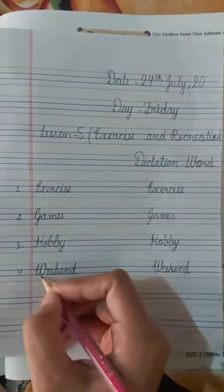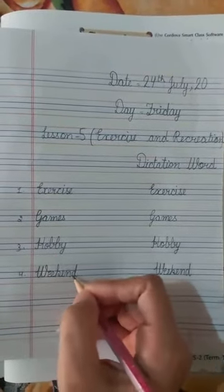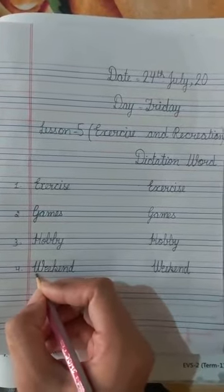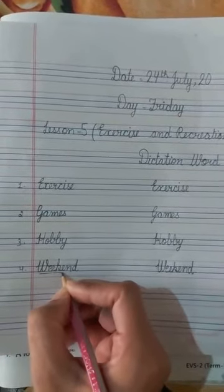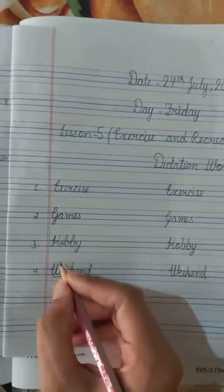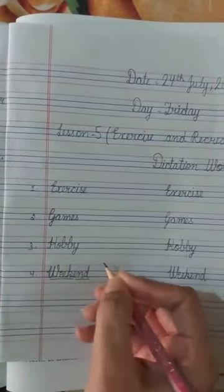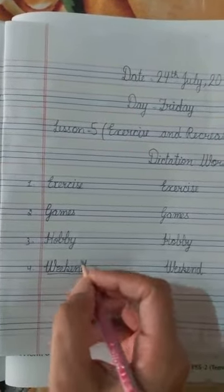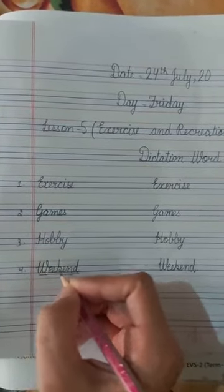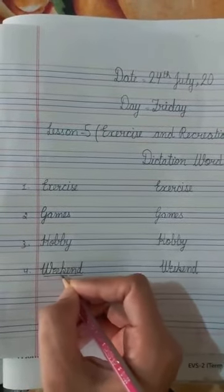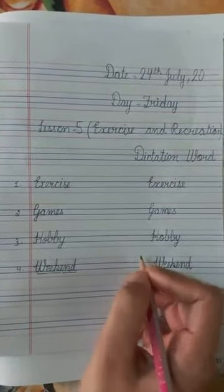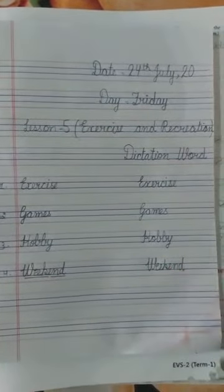Fourth is 'weekend.' You will find the meaning in the word itself: 'week' means week, and 'end' means the end — hafta khatam honi wala — like Saturday and Sunday. So it's called weekend: w-e-e-k-e-n-d, weekend.